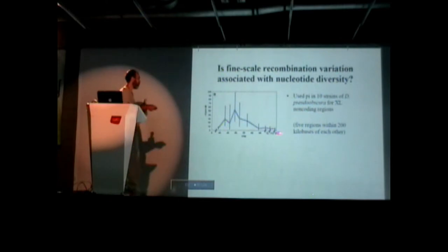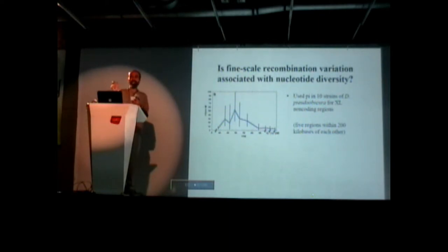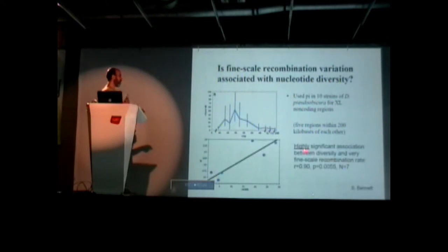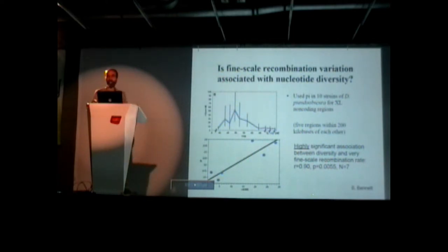This plot from a rotation student shows variation in 10 strains of D. pseudoobscura in this region. Five of these loci are within 200 kilobases of a hotspot. She looked at the association between recombination rate (on one axis) and nucleotide variation. What she found: there's a highly significant association between fine-scale recombination rate and nucleotide variation.